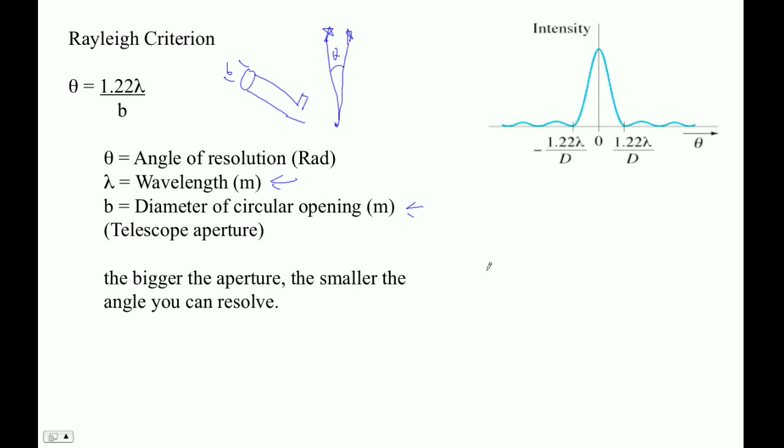Now the reason this is is that even a single aperture like this, light going through it will interfere because the light that goes through one side goes a slightly different path length than the other side. And so what you get is this little single slit interference pattern.